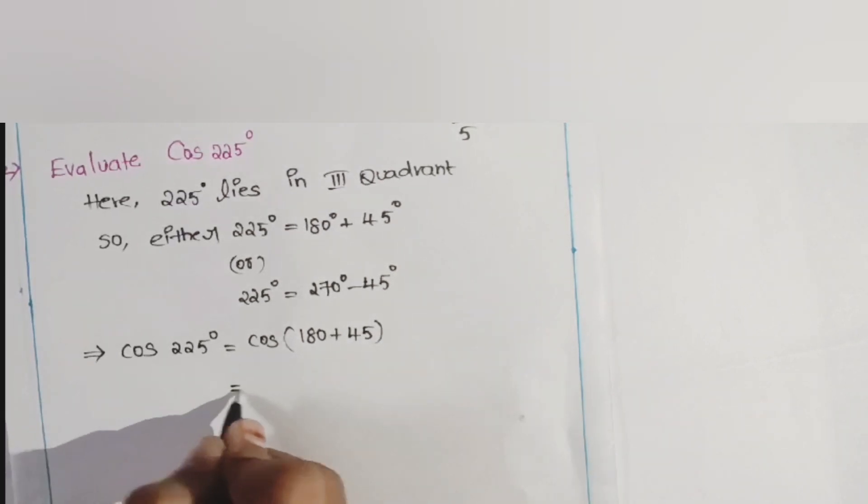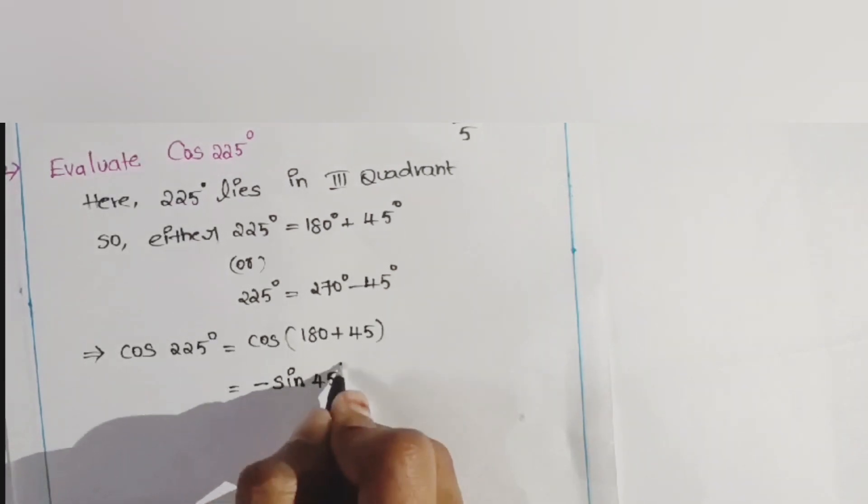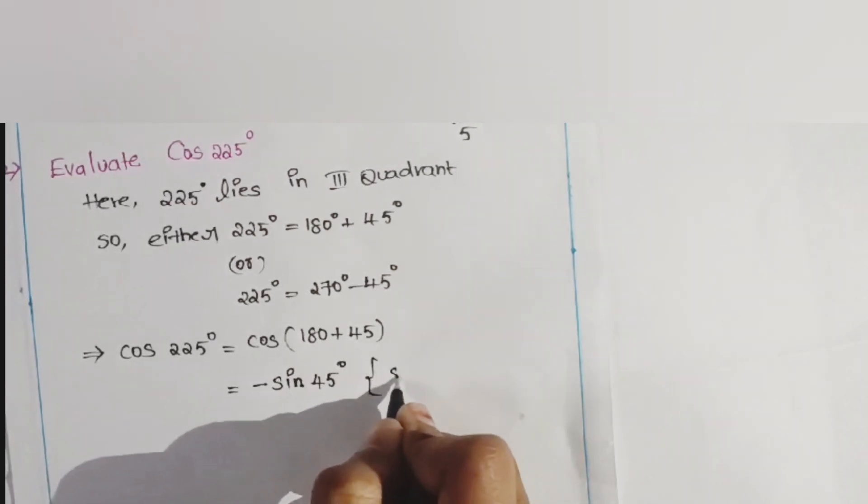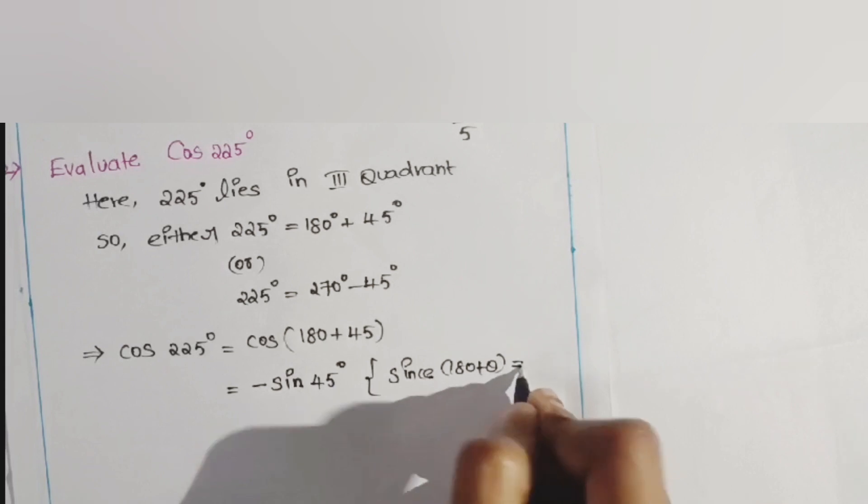So we can write that as minus sin 45°. Why am I writing minus sin 45°? Here is a formula called cos(180° + θ). Cos(180° + θ) will be considered as minus sin θ.